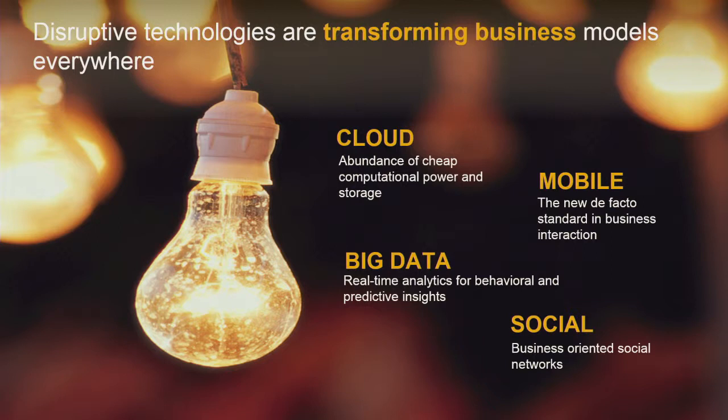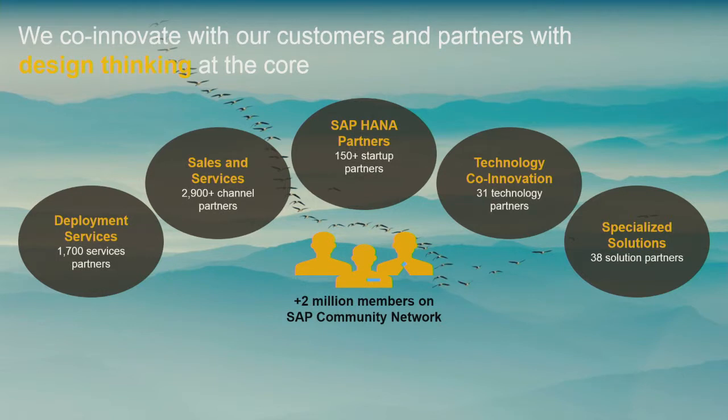To recap briefly, we have these disruptive trends and technologies that are changing the way that business applications work for both our customers and for us. What we need to do is work with our partners across the globe to manage this change and create applications that are going to benefit our customers with their diverse needs. The way that we do that is with a process called design thinking — a way of creating an application that is desirable, feasible, and viable. We work with our partners to figure out how to make a product-market fit for each of the apps in the new roles across the diverse needs of our customers.